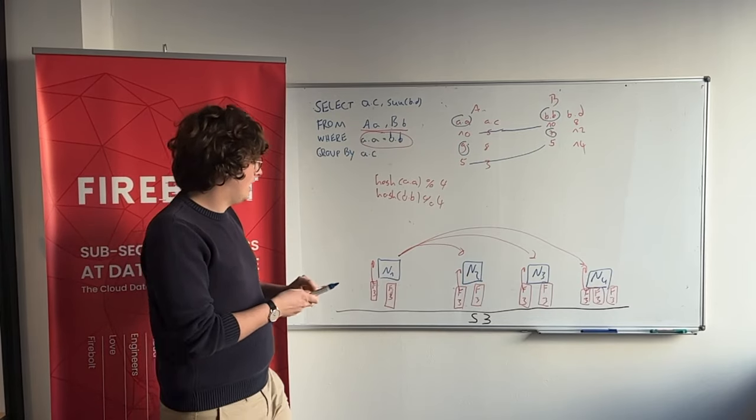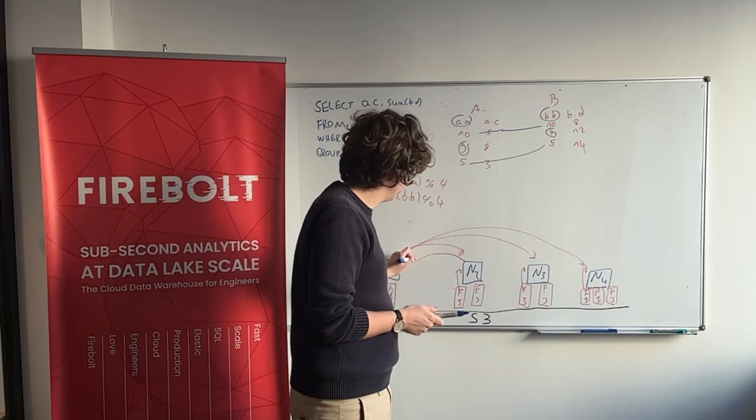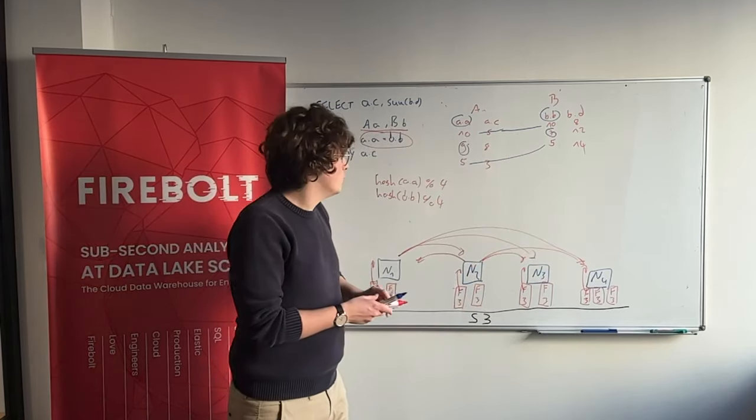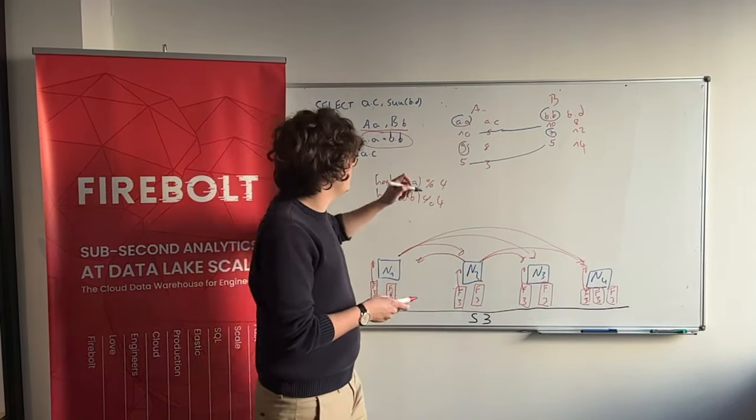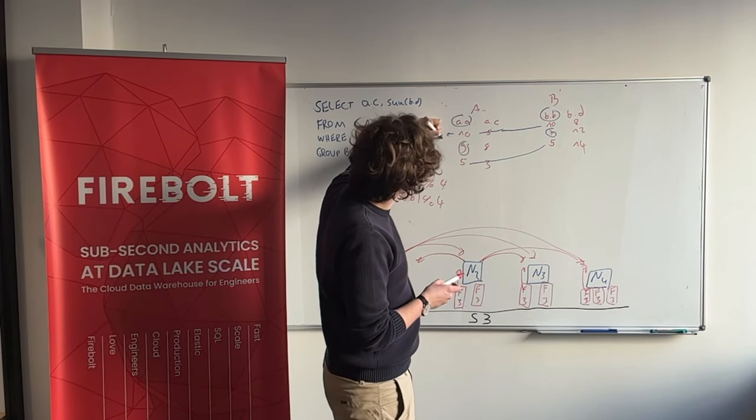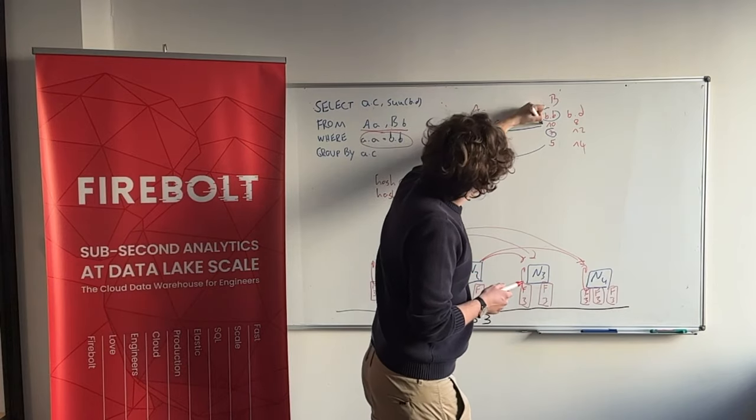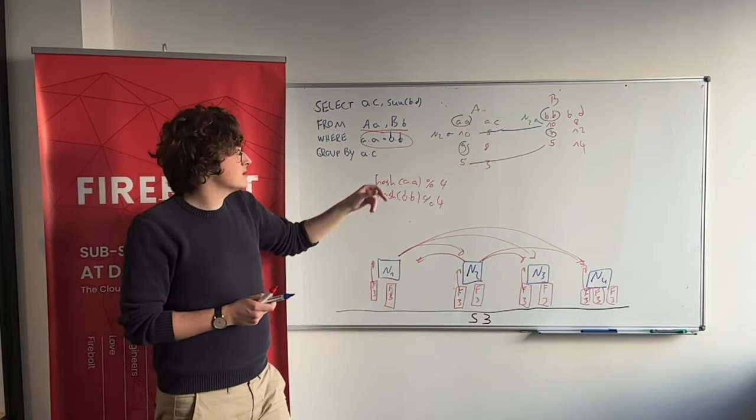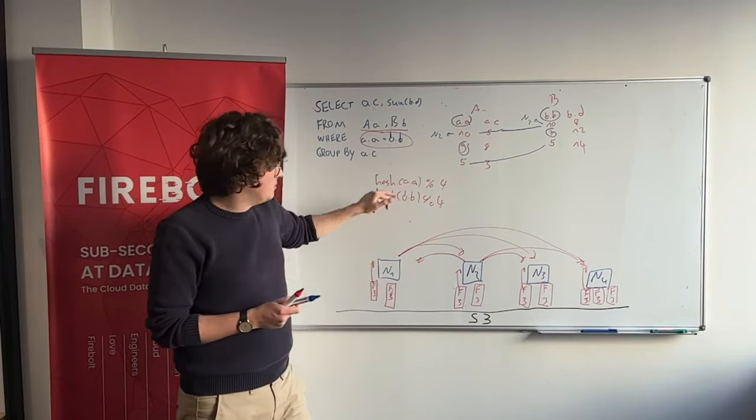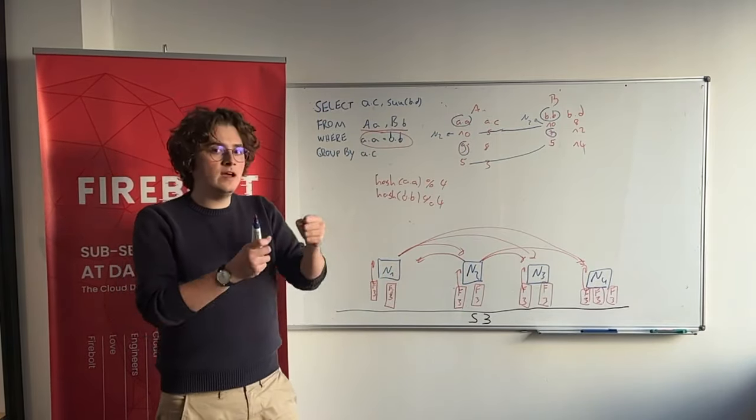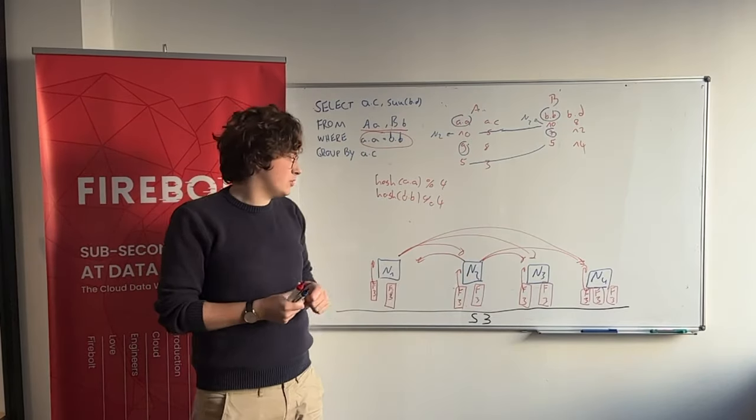For example, after the shuffling, and each node really sends to each node, I don't want to draw all of the arrows. What you'll have is, for example here, this row goes to node 2. And this row would also go to node 2, because both have the value 10, they are partitioned by the same function, so they end up on the same node. And this way, we spread all data evenly across the cluster, and we can do a join in a completely local way.